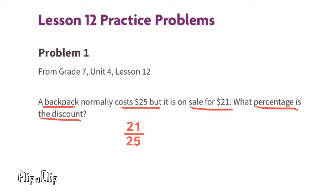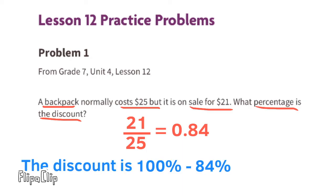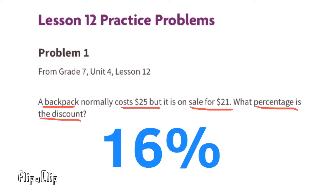21 divided by 25 is 84 hundredths, which is 84 percent. To find the percentage of the discount, we need to subtract 84 percent from 100 percent. 100 minus 84 equals 16. That means the sale is a 16 percent discount.